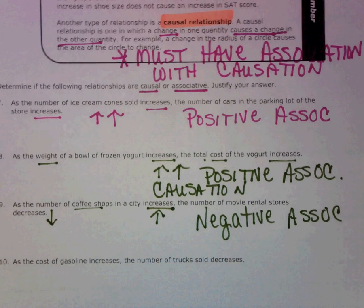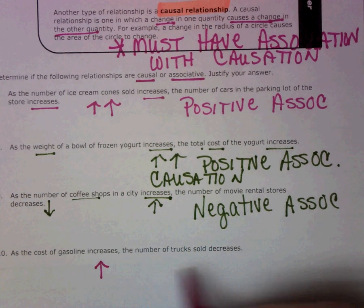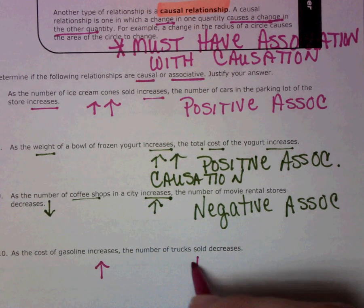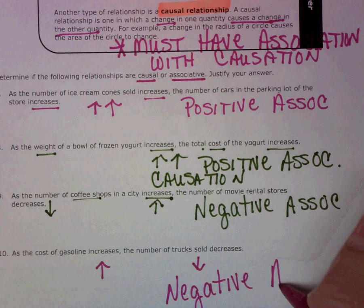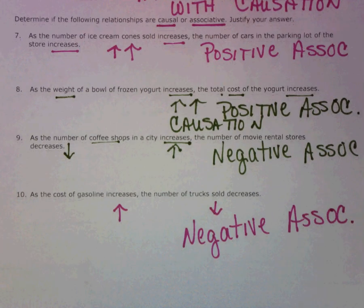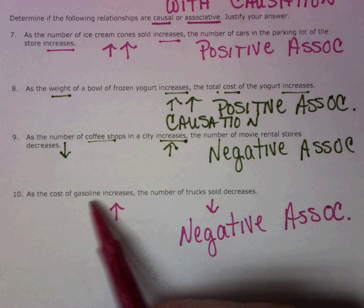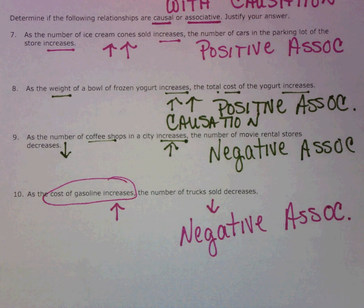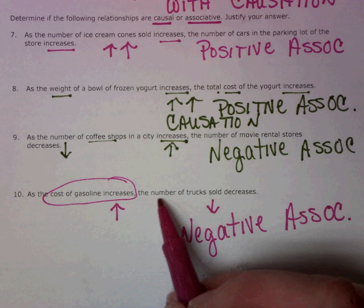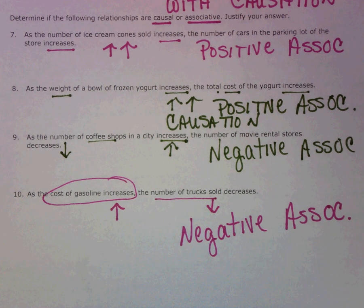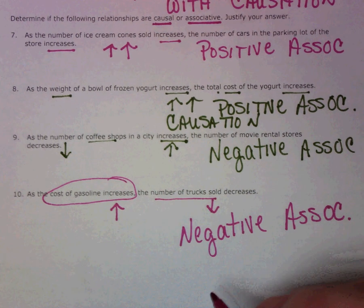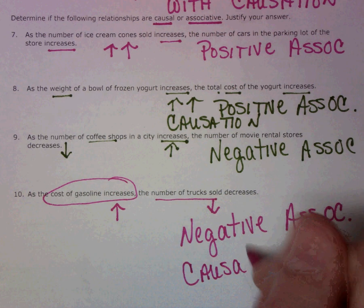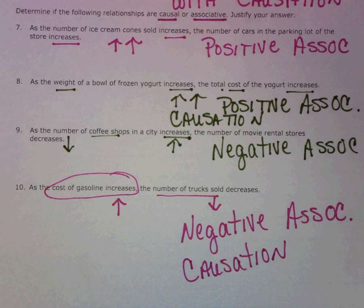Number 10: as the cost of gasoline increases, the number of trucks sold decreases. That is a negative association, because as one goes up, the other is going down. Now, you might be able to argue that this is a causation, because if the price of gasoline is really high, that probably is going to cause people to not buy trucks, since trucks use a lot of fuel. I know I thought about that when the price of gas got really high — about buying a car with better fuel efficiency. So you could argue that there is causation. However, you could probably also argue the other way, that there is no causation.